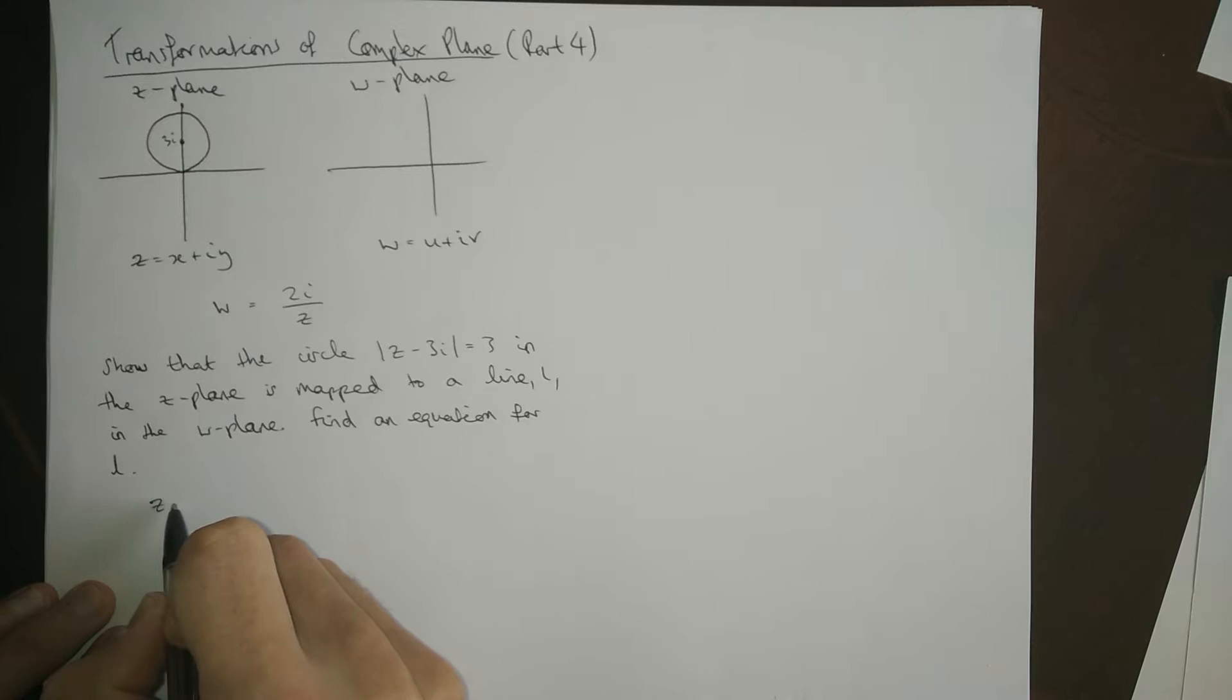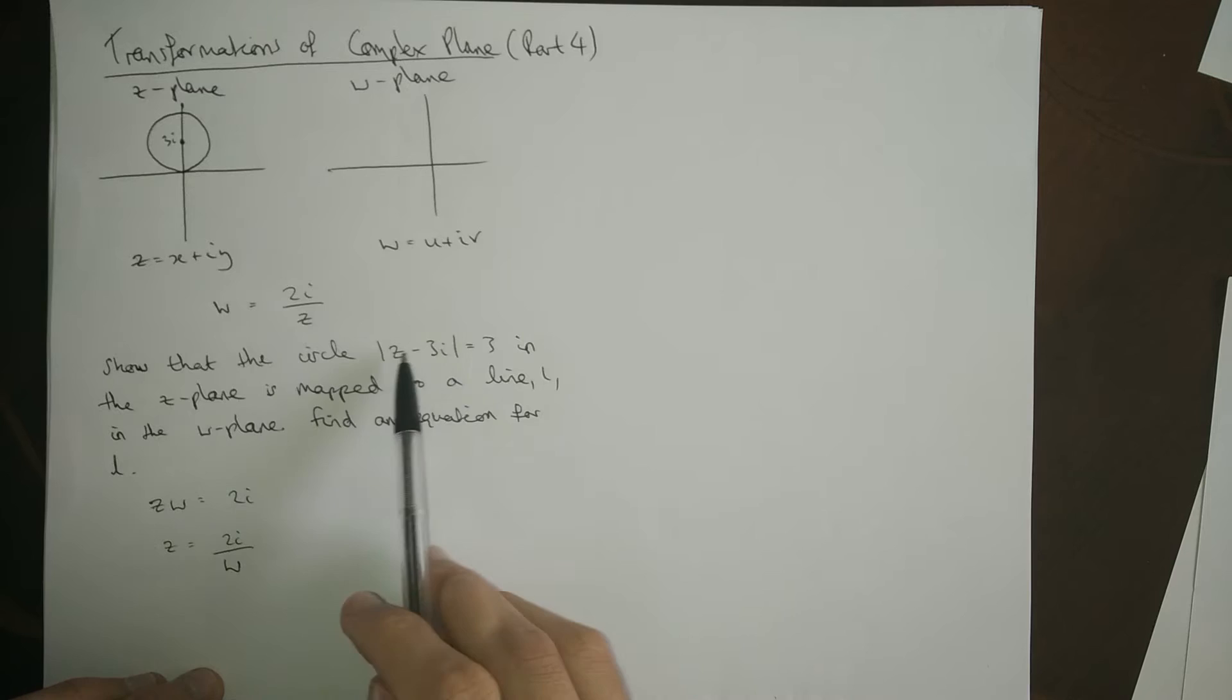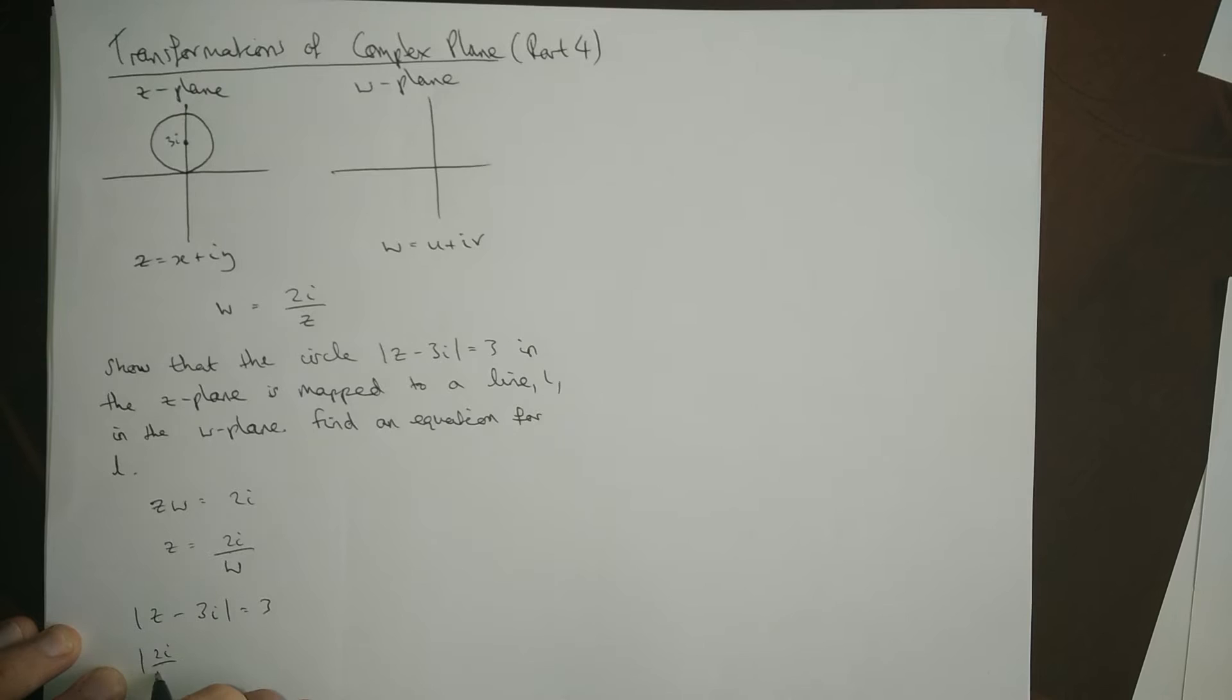The beginning is exactly the same. We still would like to rearrange this equation by multiplying by Z and then dividing by W to get Z in terms of W. That's still useful. And then we still want to use this information here. But rather than computing this thing and working out the real imaginary parts, because we don't actually know anything about the real imaginary parts, we may as well just take this and plug it straight in there where the Z is. So, we go from Z minus 3i equals 3 to 2i over W minus 3i equals 3.